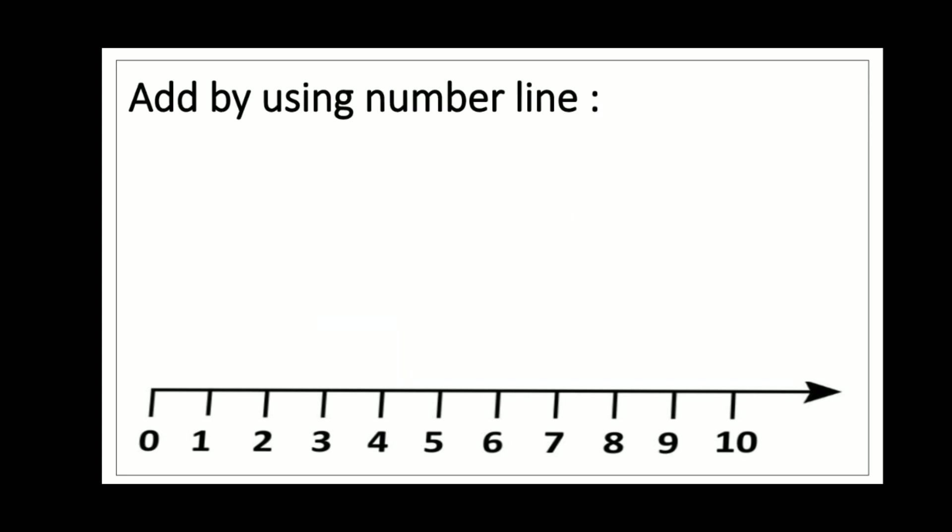Let's add eight plus two by using number line. First number is eight and second number is two. So let's start with eight and add two in it. So the number of eight plus two will be equal to ten.